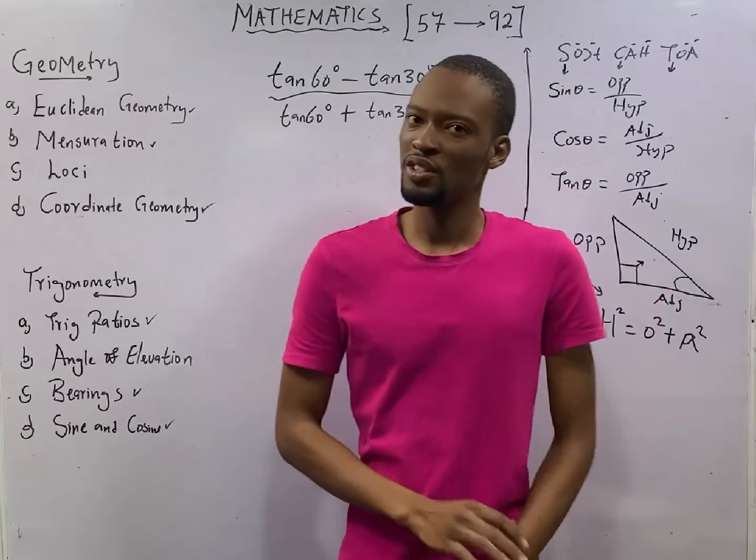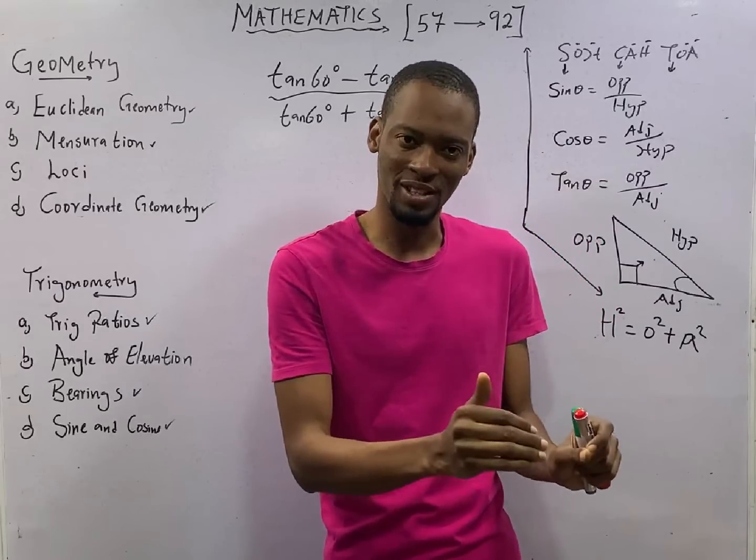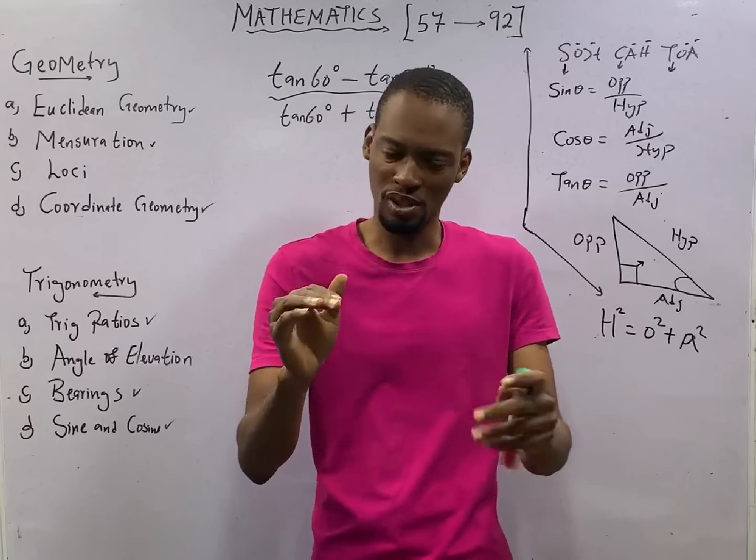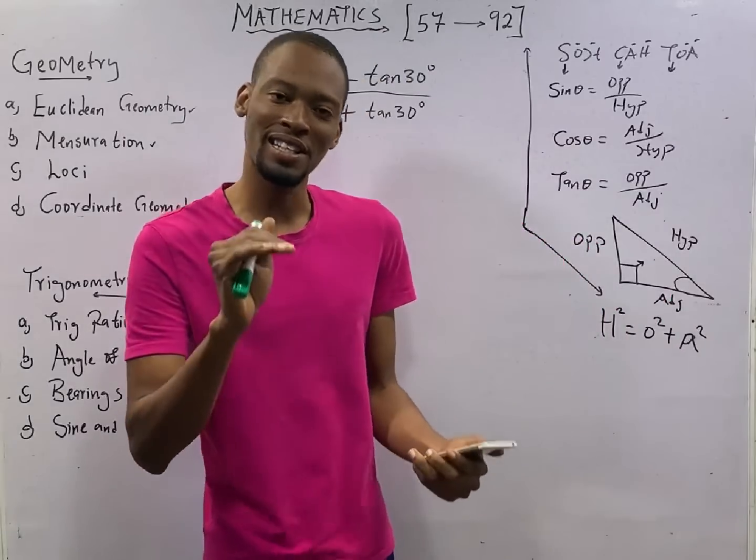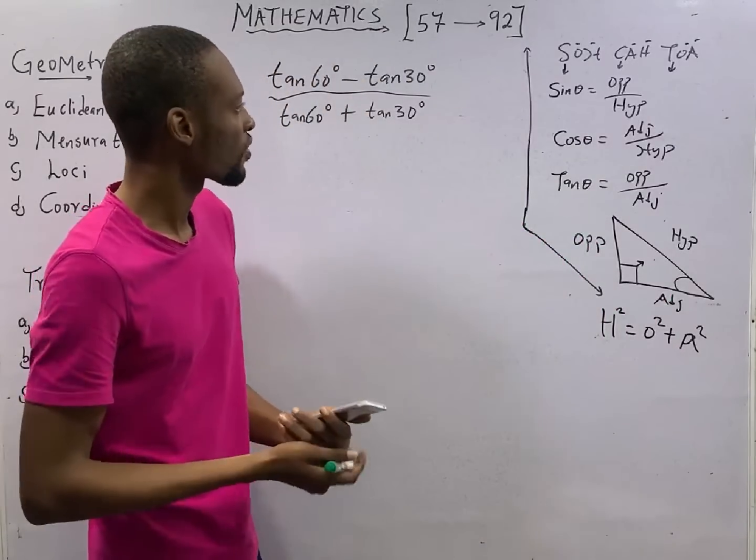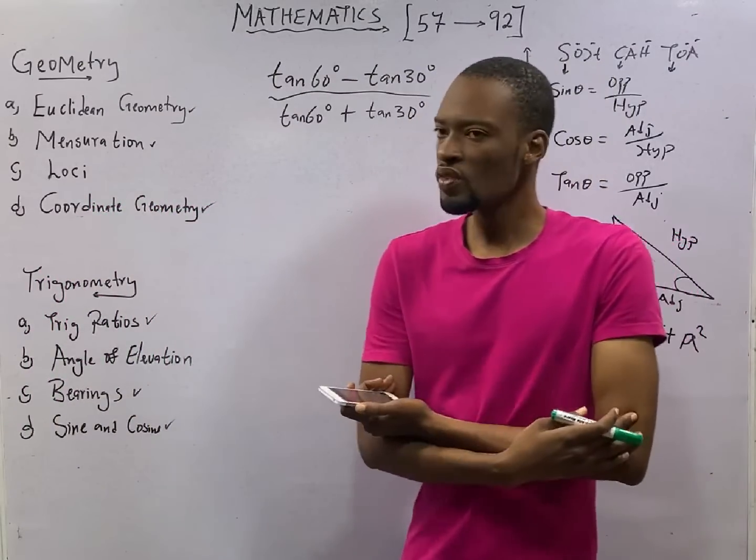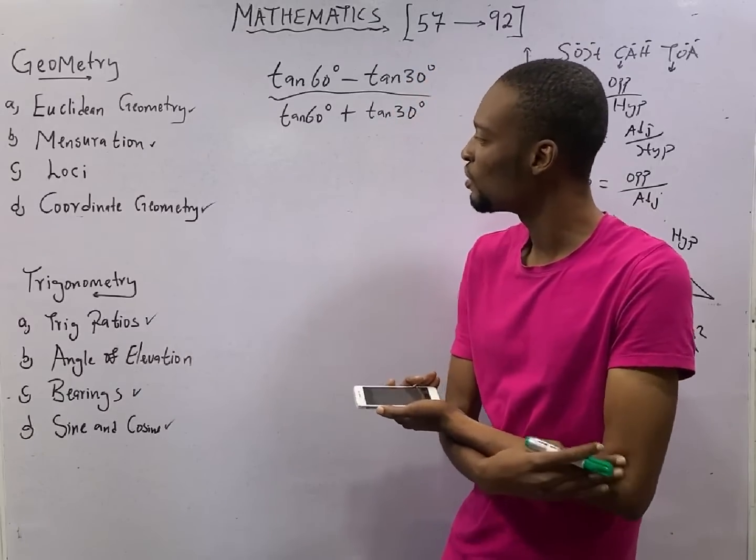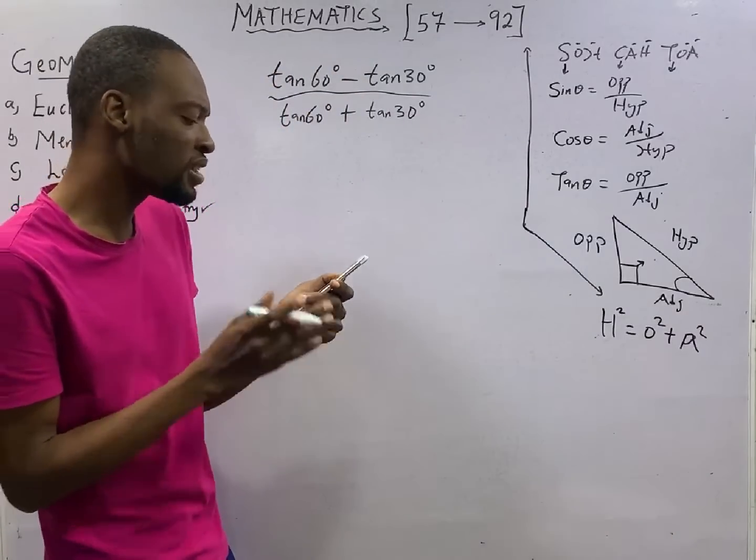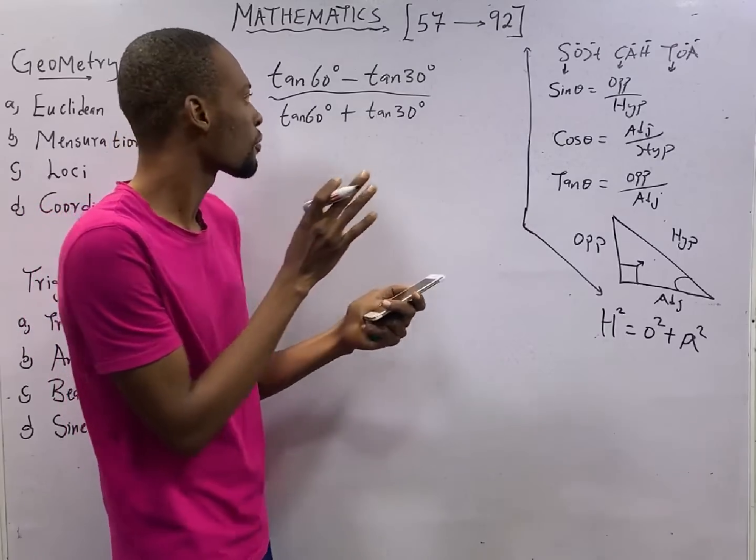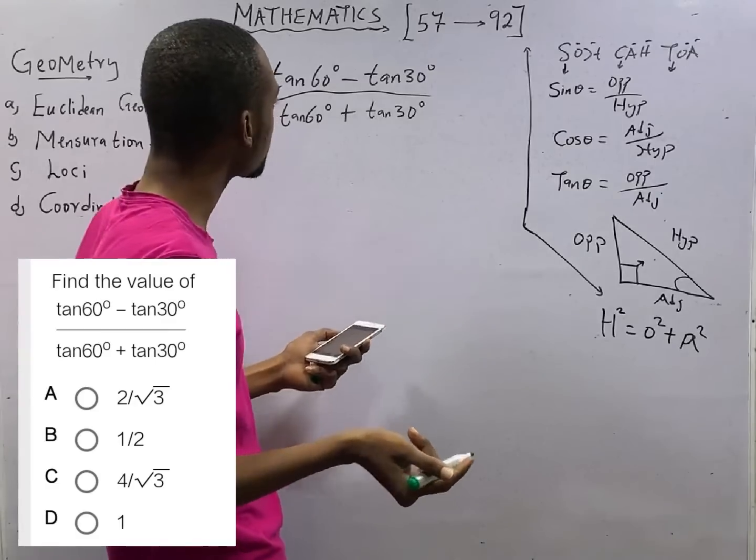This is episode number 79 of the 120 days to JAMB Mathematics with Flash Isaac. This episode is for special people. Special people pay attention to special things and they pay attention to special angles. At the first episode of the trigonometry and geometry, I introduced you to special angles. This is where the remembrance comes to play. Now they are testing your ability to know the tan of 60 and that of 30 degrees.